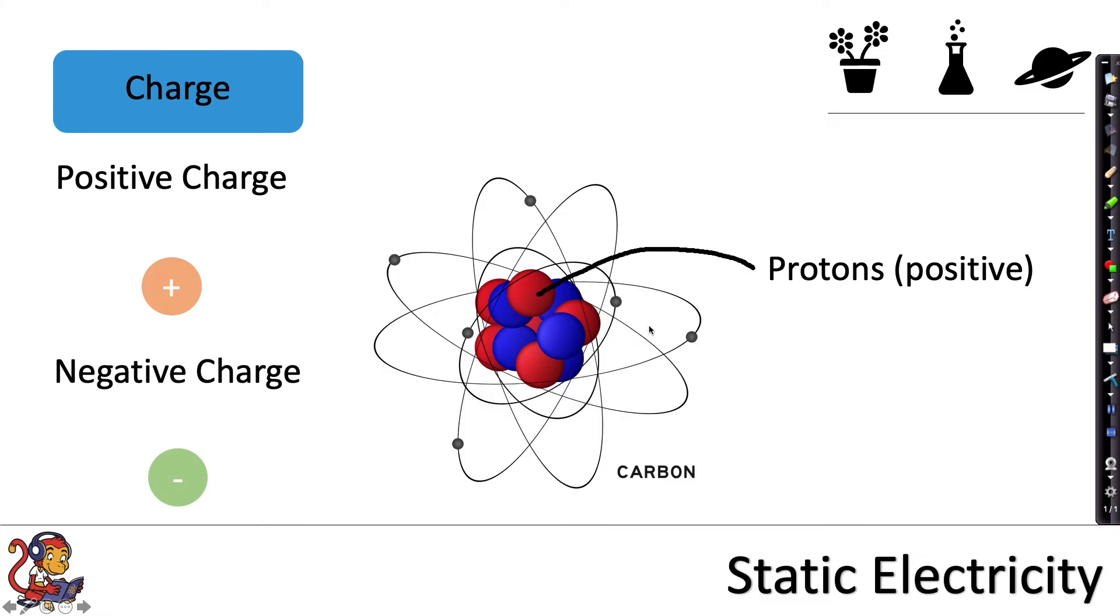They also contain electrons which are negatively charged and these are found around the outside of the atom. They also contain neutrons which have no charge and again those are found in the nucleus which is in the centre of the atom.